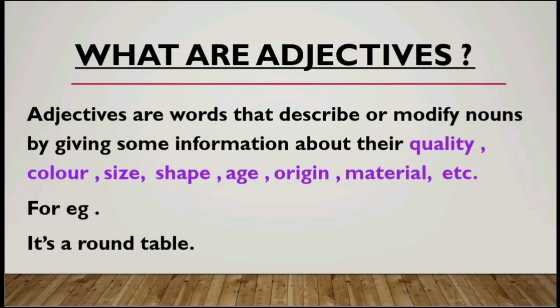What are adjectives? Adjectives are words that describe or modify nouns by giving some information about their quality, colour, size, shape, age, origin, and material. Basically, adjectives are words that describe — they tell us something more about nouns and they give information about the following topics.